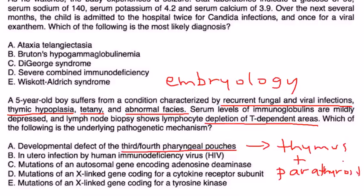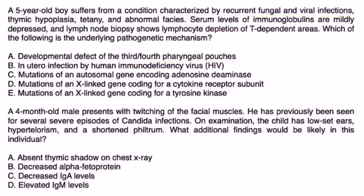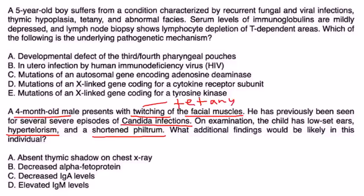Finally, a four-month-old male presents with twitching of the facial muscles. On exam, the child has low-set ears, hypertelorism, and shortened philtrum. What additional findings would likely be in this individual? Again, tetany is described here as the twitching of the facial muscles. Recurrent infections with candida, hypertelorism—that's the large distance between the eyes—shortened philtrum, these are all characteristic findings and part of the abnormal facies of DeGeorge syndrome. And if you remember, if you do a chest X-ray, because the thymus is absent, that will be seen. Therefore, the answer is choice A.